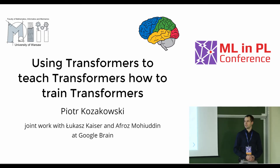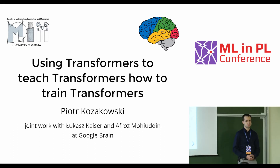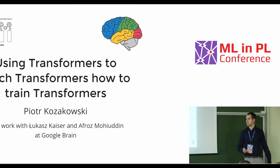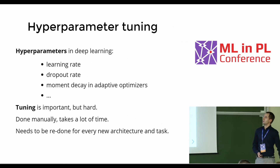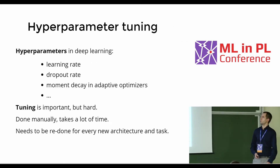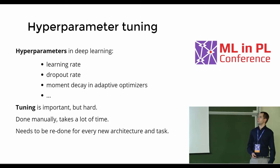I'm going to be talking about how to use transformers to optimize hyperparameters of other transformers and also other deep learning architectures. So first let's consider what sorts of hyperparameters we have to usually deal with in deep learning.